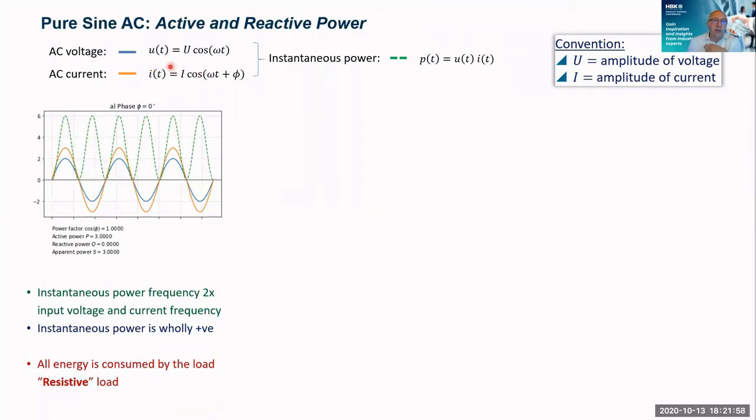So I've got a voltage u(t) which is simply equal to U cos(ωt). And here, my capital U, my capital I, I'm using a conventional mathematical definition that these are the amplitudes of those. So my current now is the amplitude capital I times cos(ωt + φ). So it's the same frequency as my voltage, but it's got an arbitrary phase angle φ.